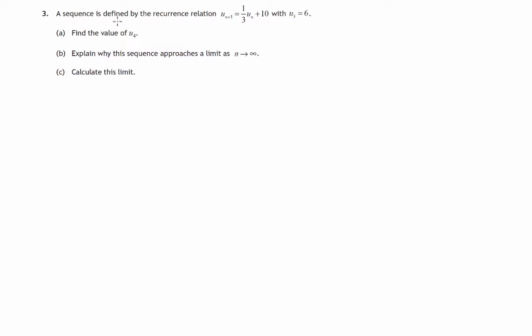There's a sequence defined by this recurrence relation: u_{n+1} is got by finding a third of u_n plus ten. Now let's recall what this sort of recurrence relation means.